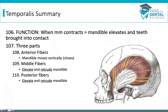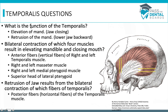They can ask about what will happen if just the anterior fibers contract — that's just closing the mouth, moving the mandible up and down. The middle fibers are going to elevate and retrude, and the posterior fibers are also going to elevate and retrude. When they ask about posterior fibers, you're going to want to pick retrusion. The temporalis has two jobs: it can both close the mouth and retrude the mouth based on which fibers you're talking about.